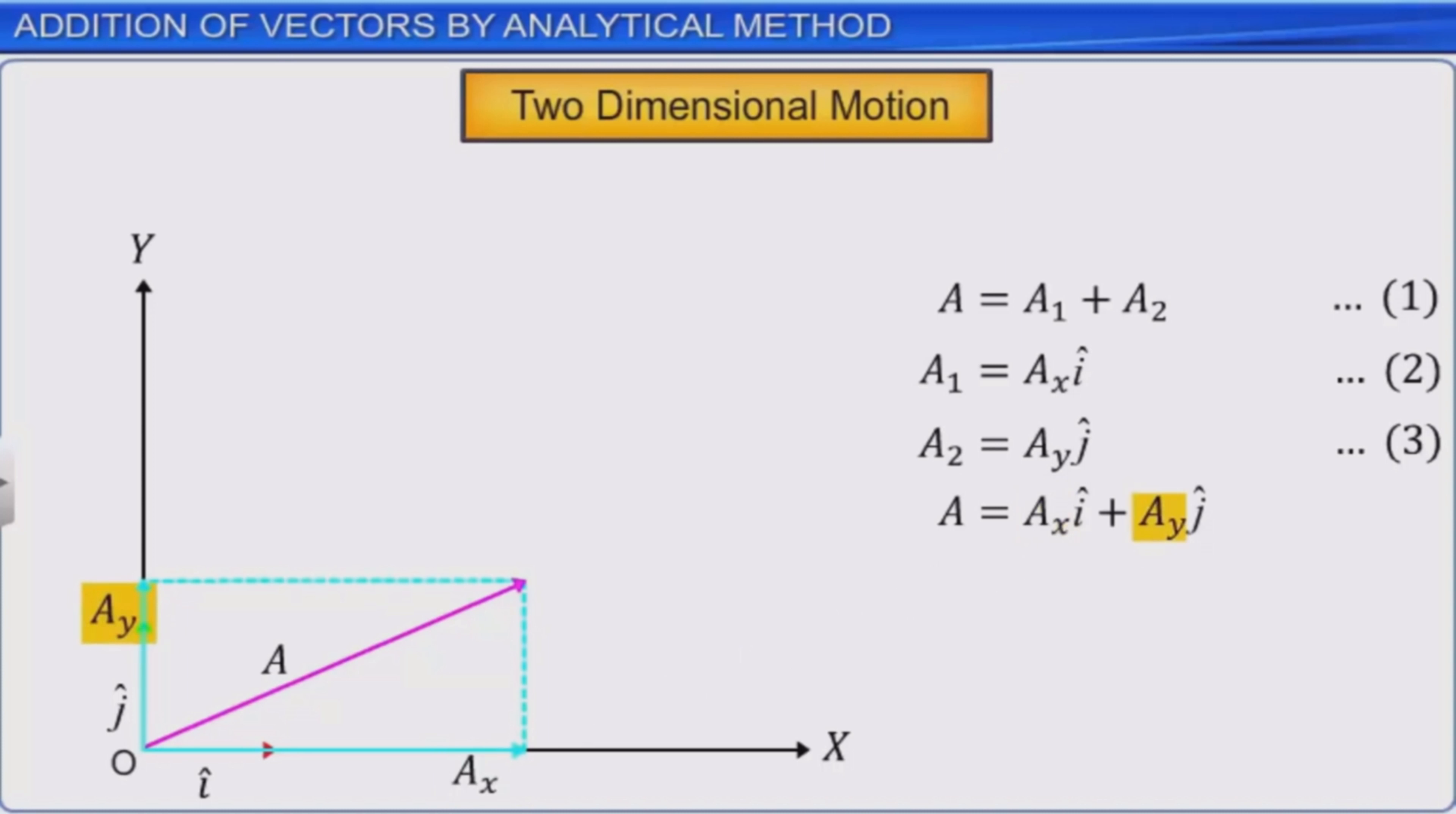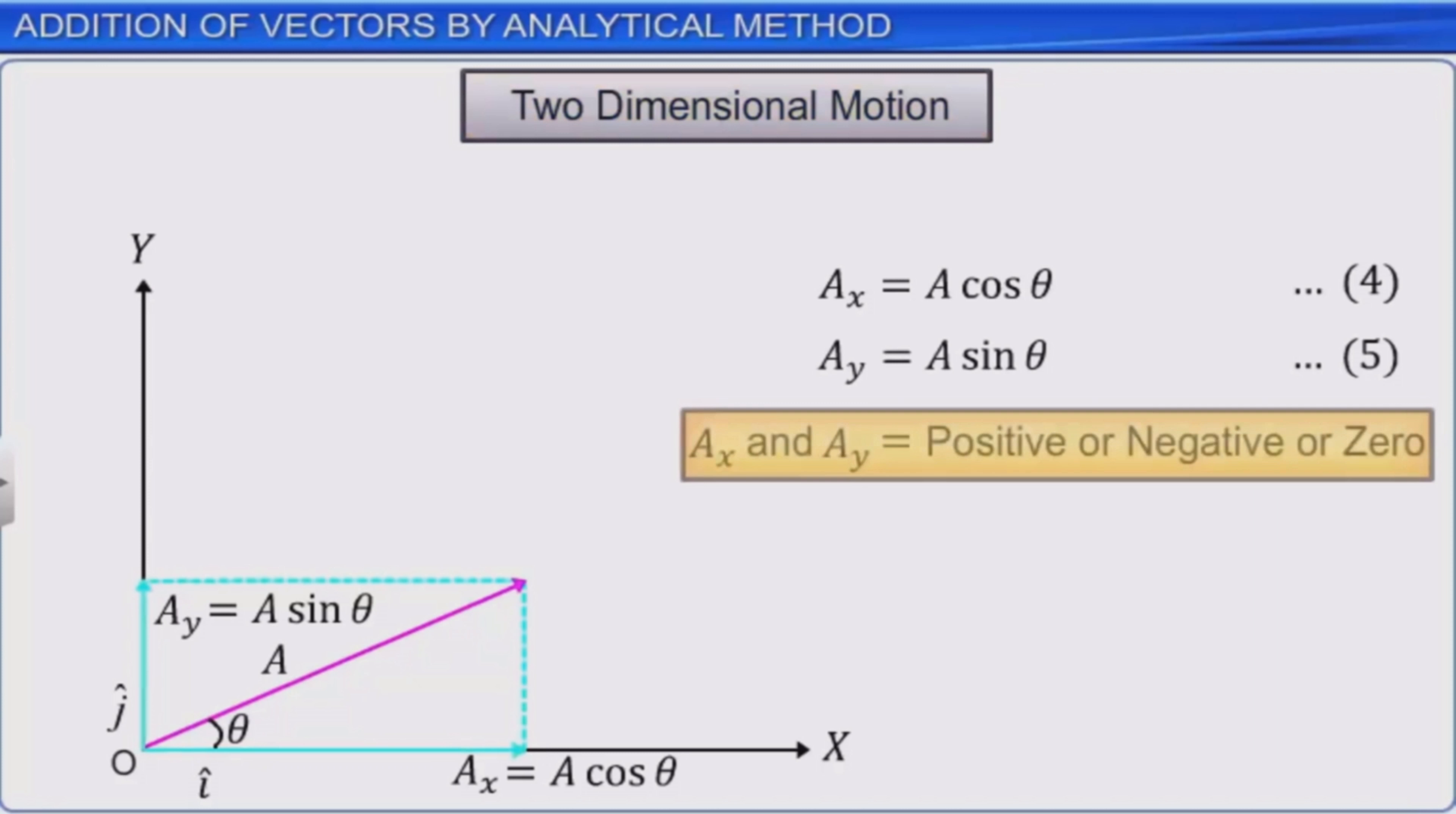Ax and Ay are the magnitudes of the components of A in the x and y direction. Here A makes an angle theta with the x axis. You can write Ax is equal to A cos theta and Ay is equal to A sine theta. Let these expressions be equations four and five respectively. Ax and Ay can be positive, negative, or zero depending on the angle theta.